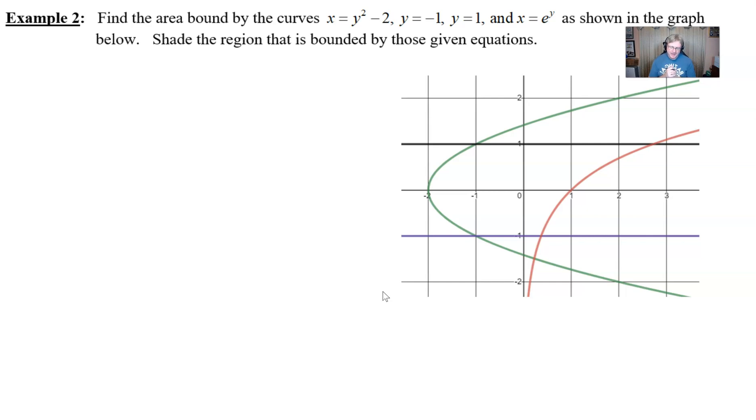Shade the region that is bounded. We catch a break here in that the curves have already been sketched for us. I've color coded these graphs to make sure we understand which one goes with which, because that's going to be important. The green graph, this parabola opening to the right, corresponds to this curve.